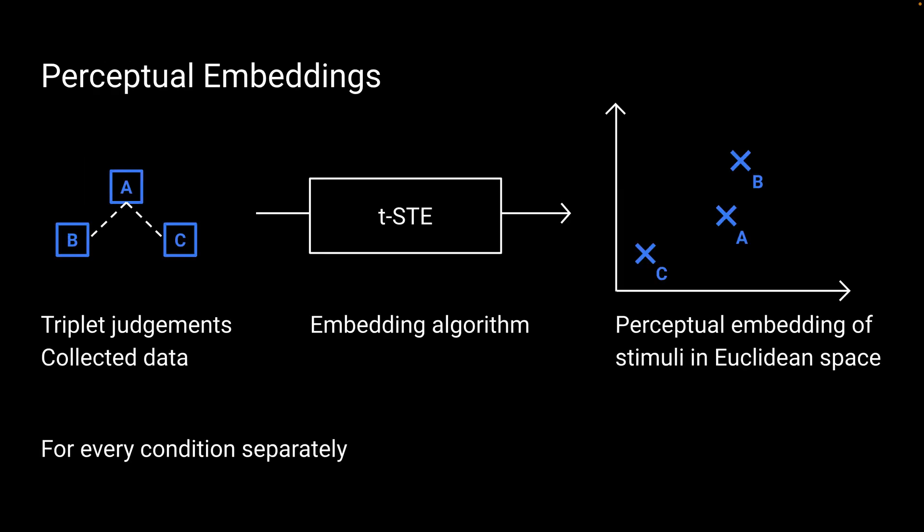From the collected triplet judgment data, we derive a perceptual embedding. So every stimulus is placed in a Euclidean vector space of four dimensions. For this we use an embedding algorithm, TSTE, which is an alternative to multidimensional scaling. And this is done for every condition separately.